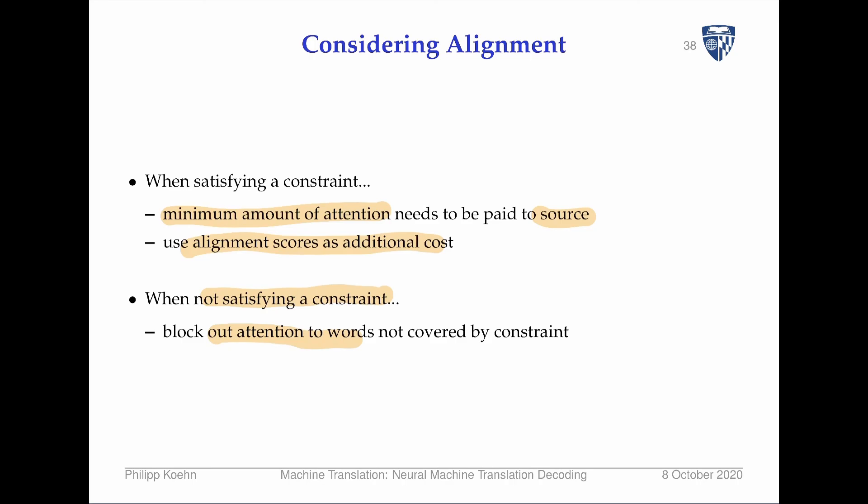We're done for today. We've now covered the core aspects of neural machine translation: how we build neural models in general using computation graphs, neural language models, neural translation models, and now decoding. This is the full core take on neural machine translation. The next lecture will cover refinements of the current approach, different architectures, and a few very essential things that actually make all of this work well.